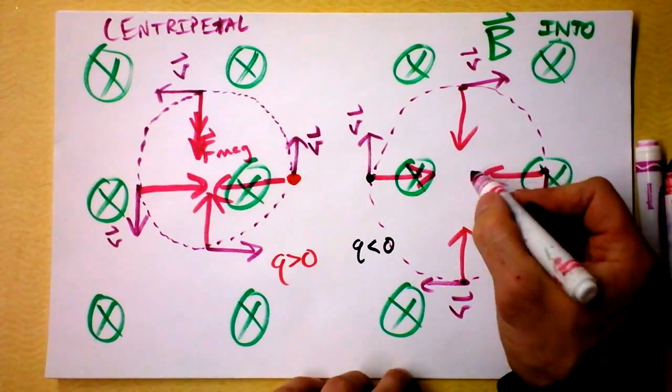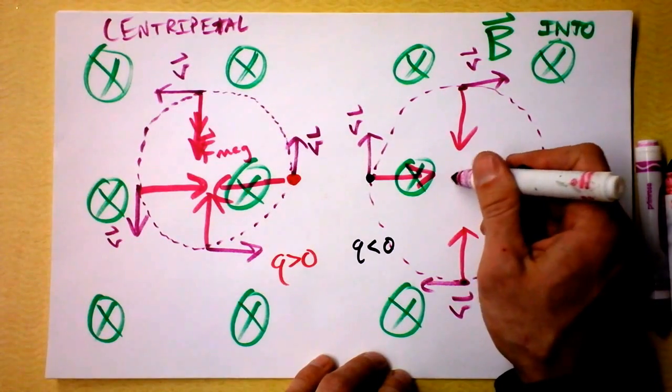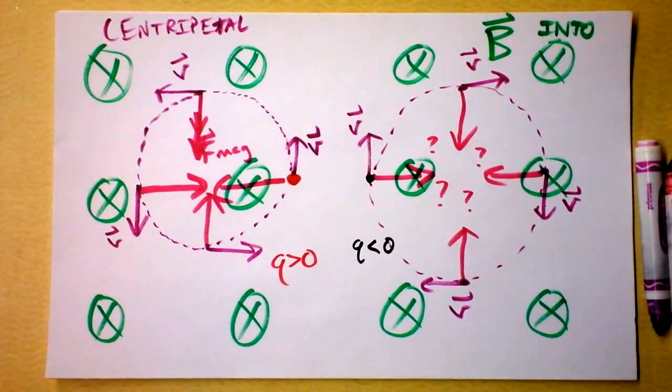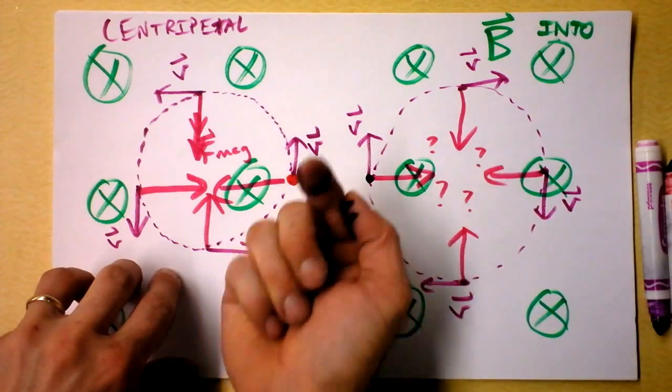So, the force is always inward towards nothing. There's nothing here. It's just magnetic field all over the place, and uniform magnetic field causes uniform circular motion. Yay! For charges moving in.